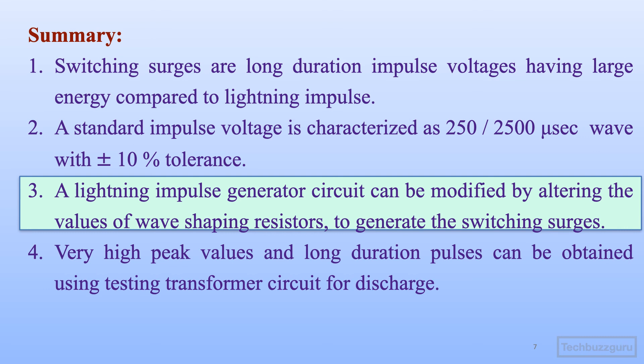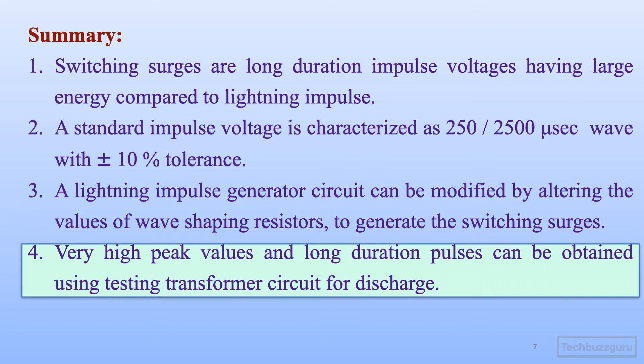The lightning impulse generators can be modified by altering the values of wave shaping resistors to generate switching surges, so no different circuit is required. And lastly, very high peak values and long duration pulses can be obtained by using a circuit that utilizes testing transformers for the purpose of discharge through the test object. This way the topic on generation of switching impulse voltages is covered through this video.